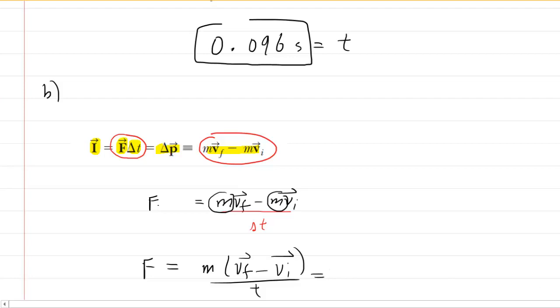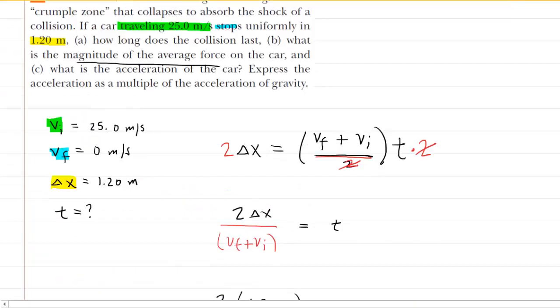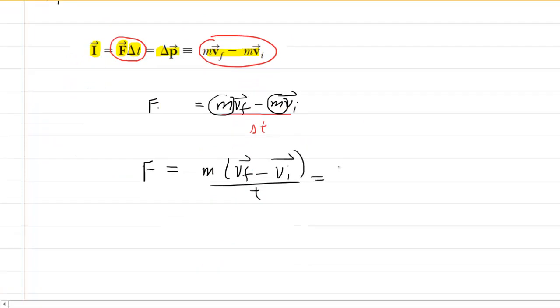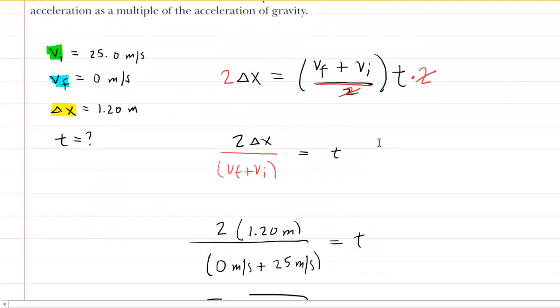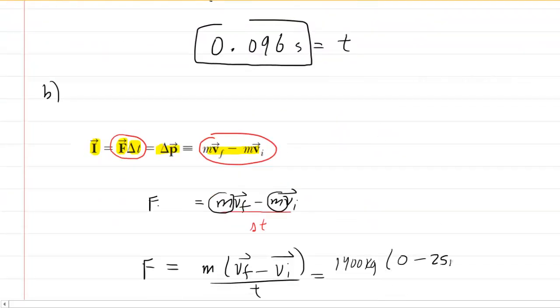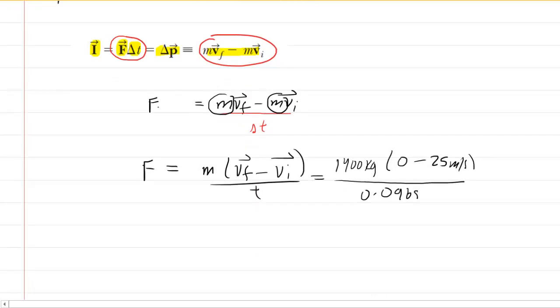And then we will plug in the known values. Now the mass of the car, I believe, was 1400, and it was. So we'll have the 1400 kilograms multiplied by the final velocity, which was zero, minus the initial velocity we recall from our previous setup was 25 meters per second. And then divided by the time interval that we just computed in part A. You can see how everything is connected together here. It's very magical. So 1400 times negative 25 into 0.096 gives us a very large number. We have force equals negative 364,583.